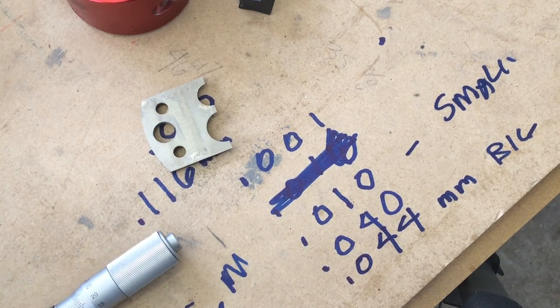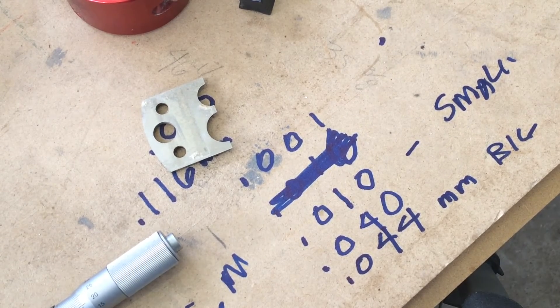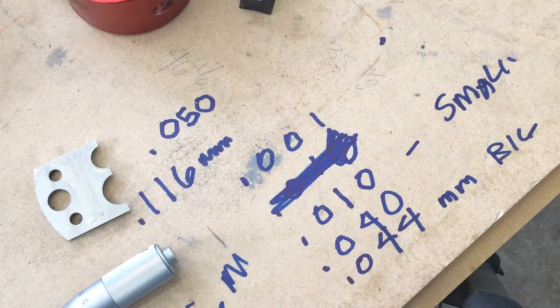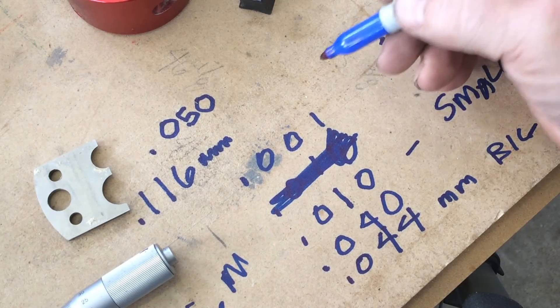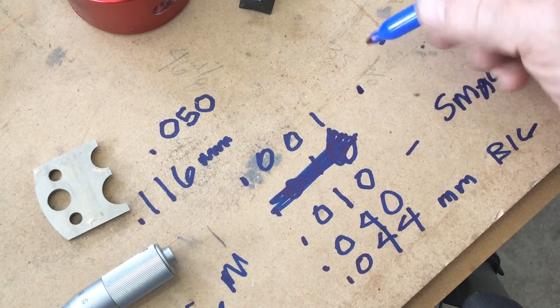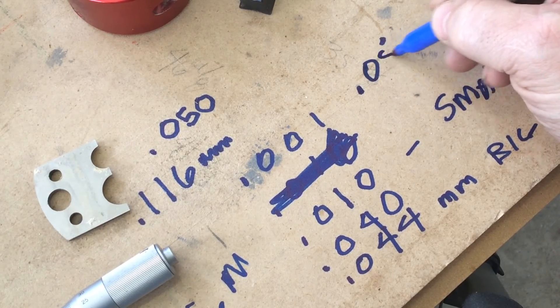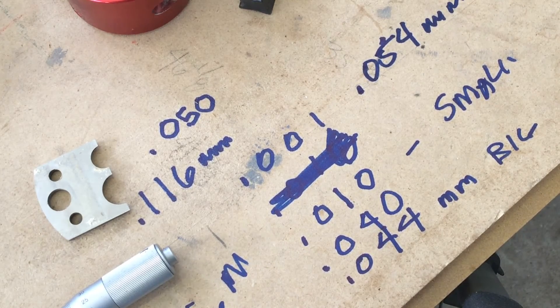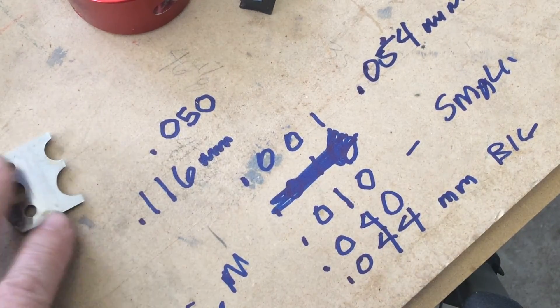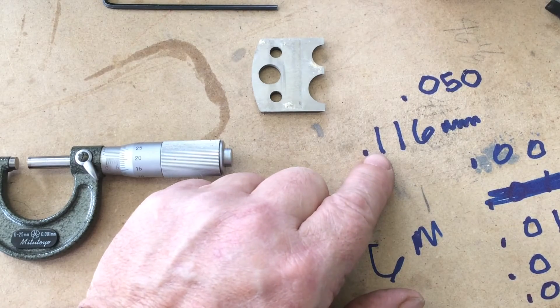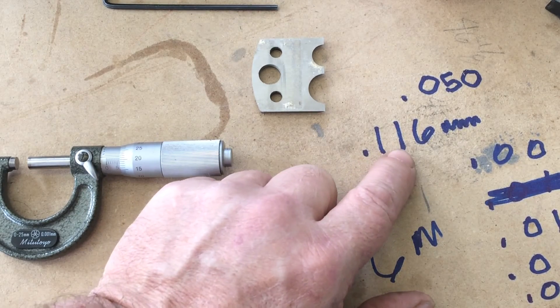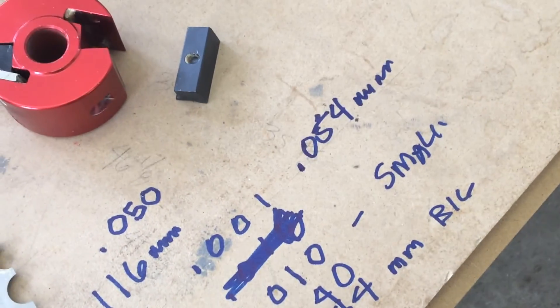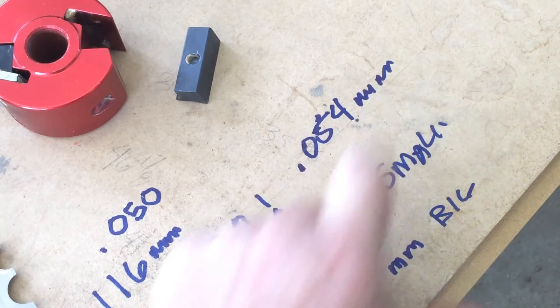So now, what is the slop? Well, the slop would be this number added to this number, which would give us 0.054 millimeters of slop. Now, let's look again at the thickness of paper. That's the thickness of paper, 0.116 millimeters. That is the slop.